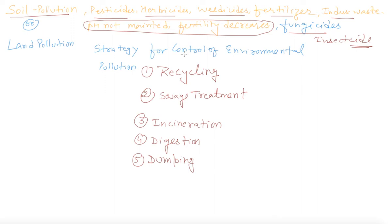Now the strategies for the control of environmental pollution. Number one is the management of waste material. This should be done by recycling. Many waste materials can be recycled — for example, collection and recycling of glass, use of scrap metals in the manufacture of steel, and combustible waste can be burnt to get energy.